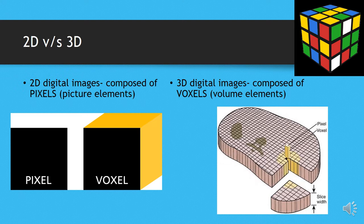We need to understand the difference between 2D and 3D in terms of radiology. In digital dentistry, we use a flat panel sensor, or a CCD or CMOS sensor, which has an array of sensors that absorb the X-rays emitted and transmit an image. In 2D, this image is received in terms of pixels — just like how you take a picture on your camera.